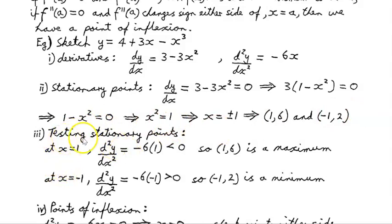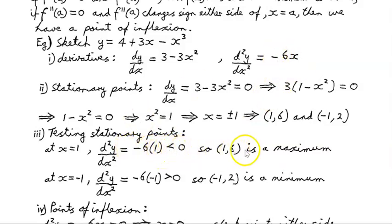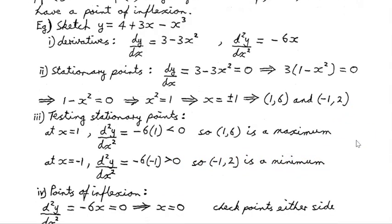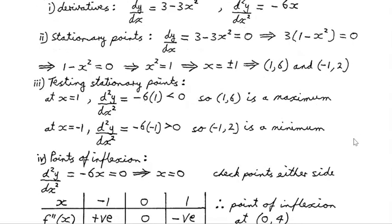Testing the stationary points using the second derivative: at x equals 1, f double dash equals minus 6 times 1, which is minus 6 — less than 0, so (1, 6) is a local maximum. At x equals minus 1, the second derivative is minus 6 times minus 1, which is positive — greater than 0, so (minus 1, 2) is a local minimum.